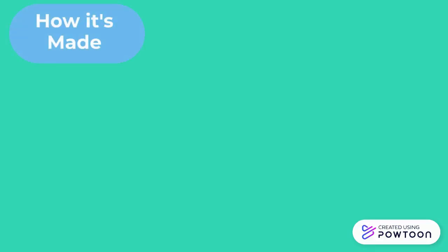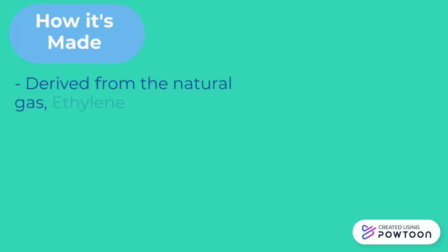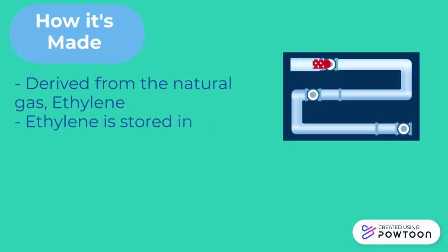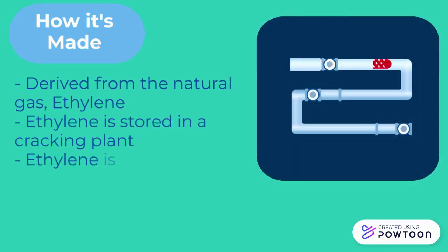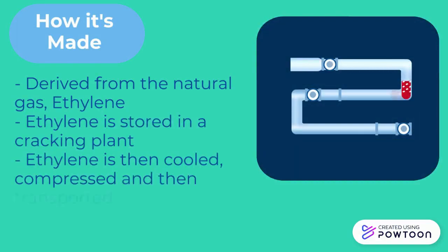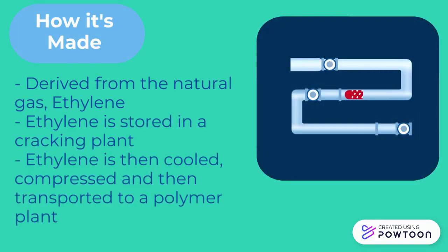How is LDPE made? LDPE is derived from the natural gas, ethylene. Ethylene is stored in a cracking plant, and then it's cooled, compressed, and then transported to a polymer plant, where the polymerization process occurs.